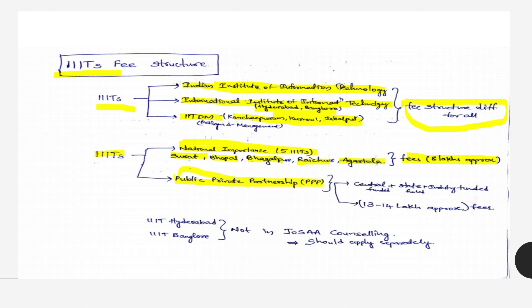Public-private partnership - there will be some IIITs which are public and private partnership. They will be centrally funded, state funded, and industry funded. Their fee structure will be around 13 to 14 lakhs per 4 years.